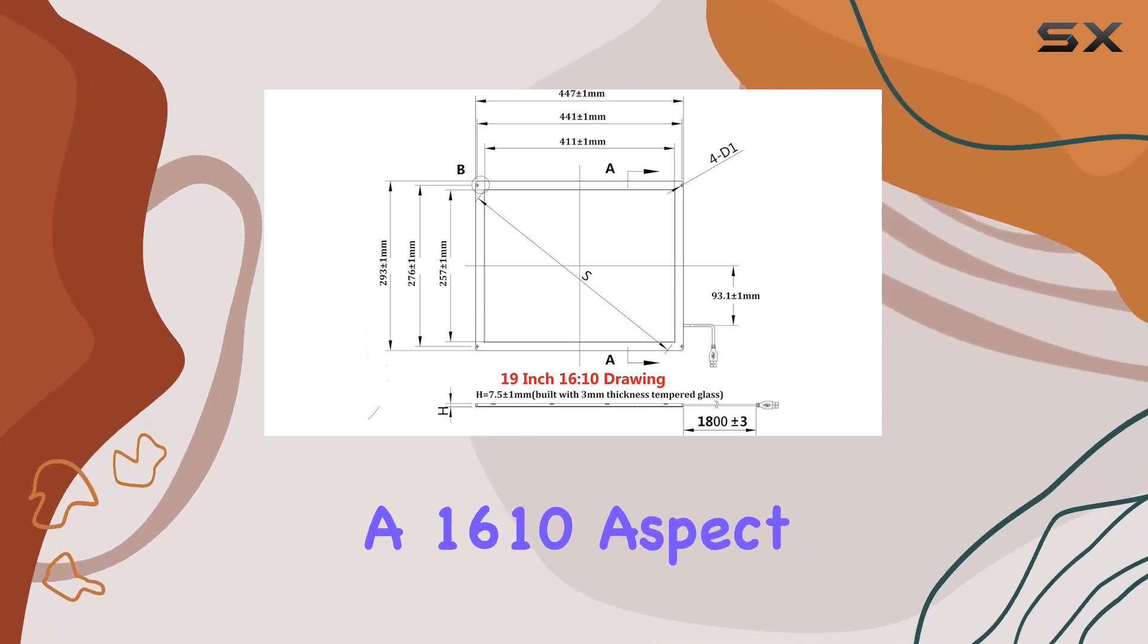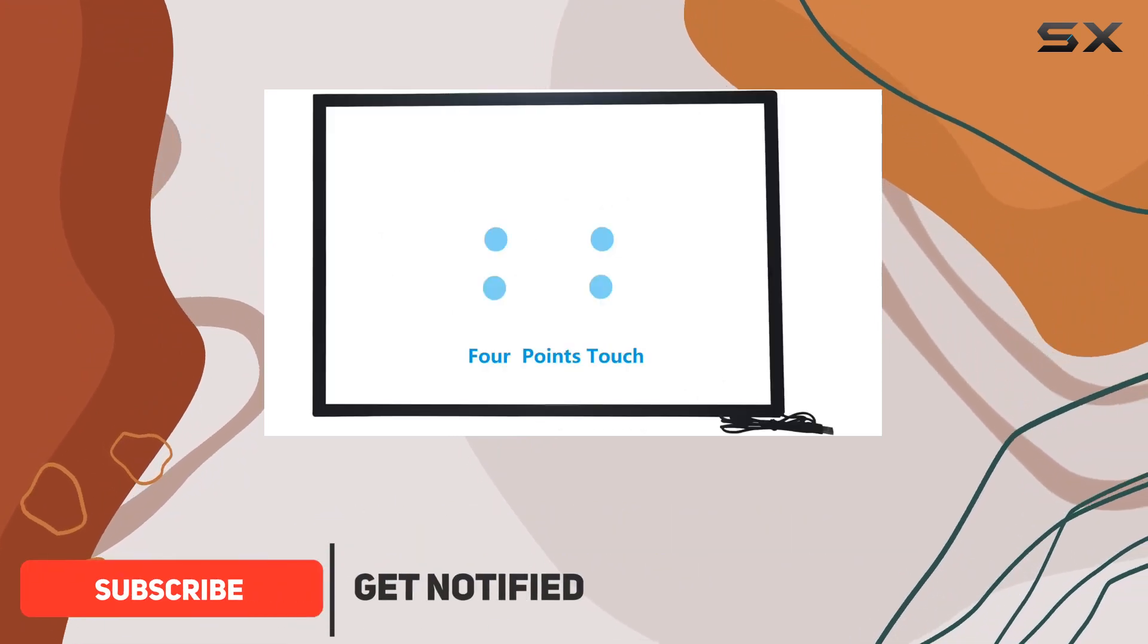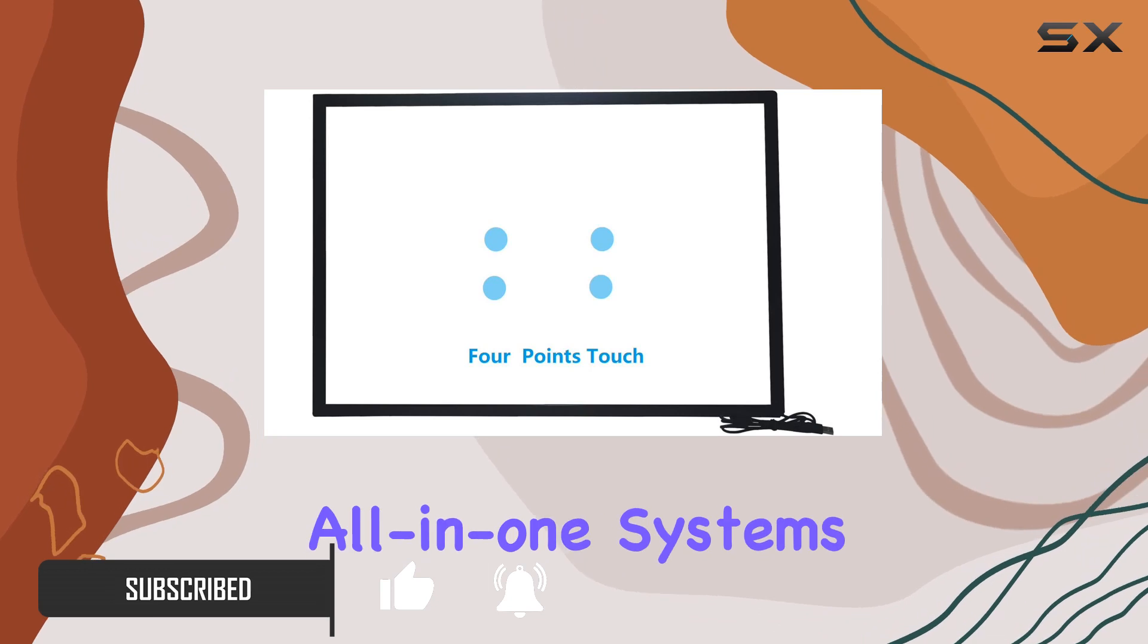With a 16-10 aspect ratio and a generous 23.6-inch display diagonal, this touchscreen is designed for kiosks, touch monitors, and all-in-one systems.